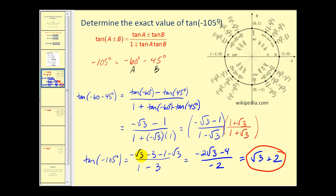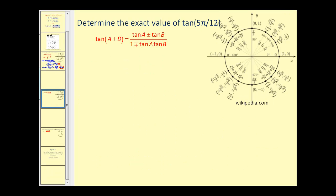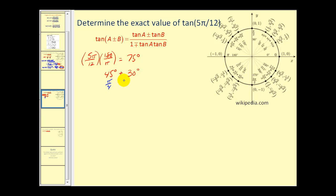There's quite a bit of algebra once we find our function values, so be careful with signs and products. The next problem has the angle in radians. Converting to degrees, it comes out to 75 degrees, so we'll use reference angles of 45 degrees and 30 degrees — or in radians, π/4 and π/6. We'll use the sum identity.